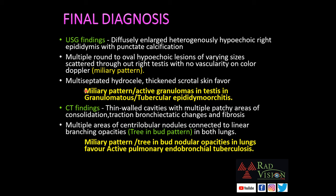Whenever you see multiple hypoechoic areas scattered in testicular parenchyma, remember the miliary pattern and suspect tuberculosis, along with the other differentials considered. The CT findings of thin-walled cavities with consolidation, traction bronchiectasis, fibrosis, and tree-in-bud nodular opacities favor active pulmonary endobronchial tuberculosis.